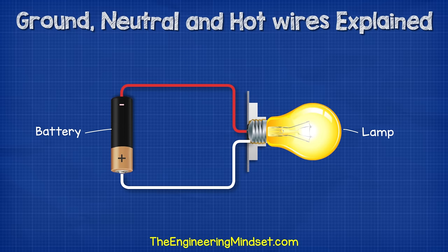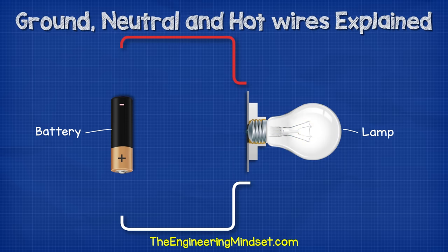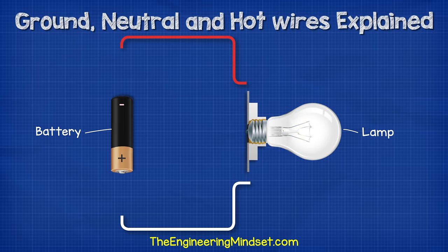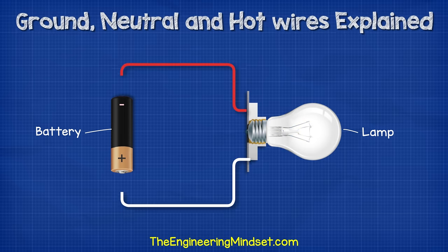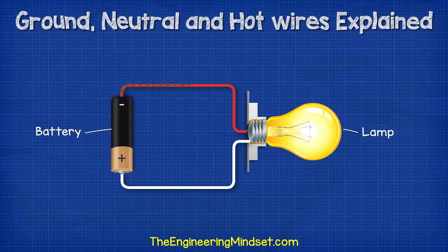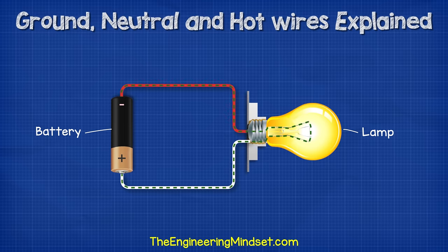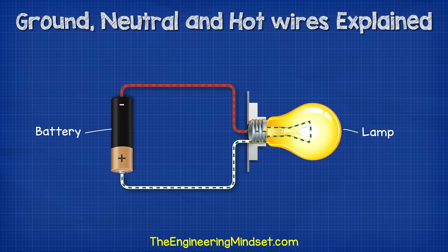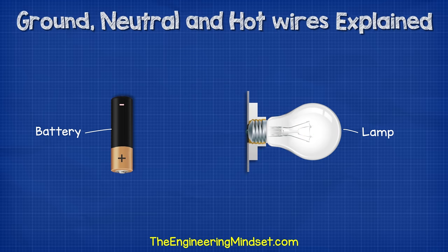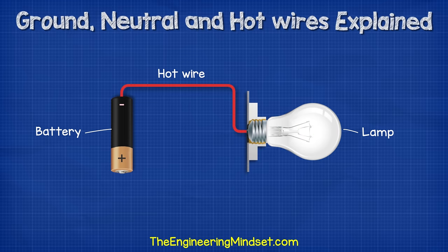When we look at a simple electrical circuit with just a battery and a lamp, we know that to turn the lamp on we need to connect both ends of the wires to the terminals of the battery. Once we connect these wires the circuit is now complete and electrons can flow from the negative through the lamp and then back to the positive terminal. So for the circuit to be complete we need a wire to carry the electrons from the power supply and over to the light.